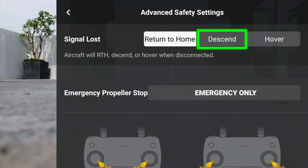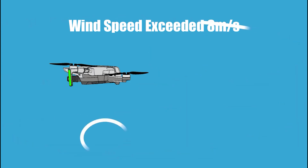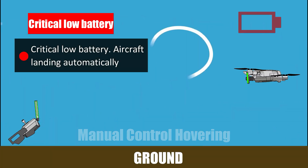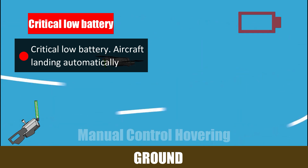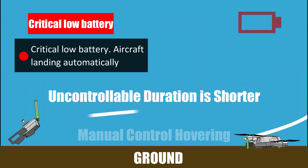There is also a descent setting if connection is lost under Settings > Safety > Advanced Safety Setting. But I would not recommend it, because when connection is lost the aircraft will hover for about 11 seconds before initiating the signal loss option to descend. With wind exceeding 8 meters per second, the aircraft will drift with the wind during that 11-second hover, and we'll never know what happens. With battery critical low and force landing, the hovering remains under our control — and even if the aircraft drifts during landing, the uncontrollable duration is shorter than if you lost connection and let it descend itself.